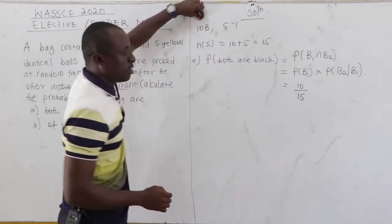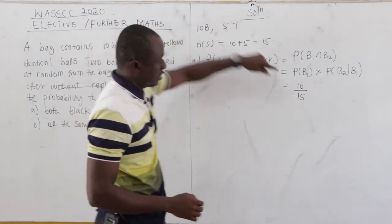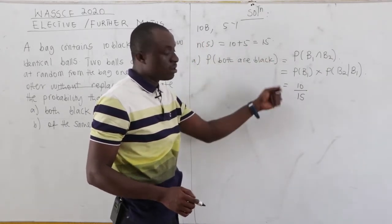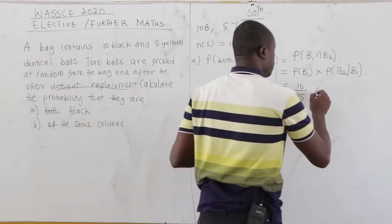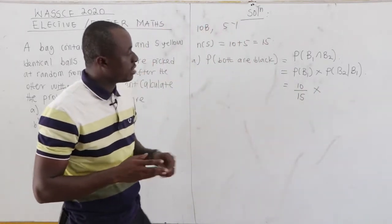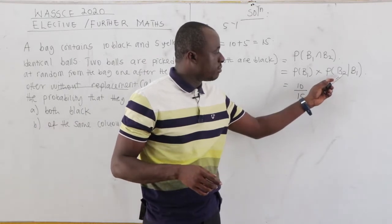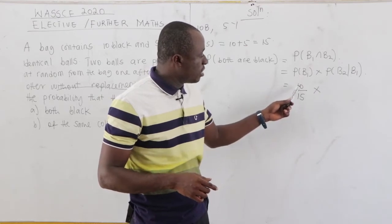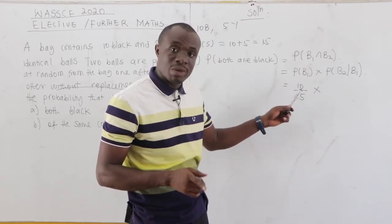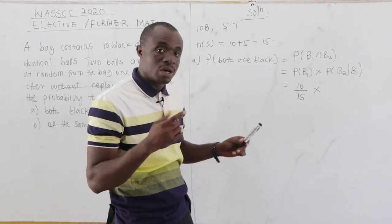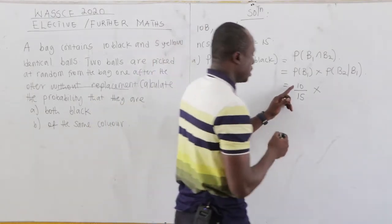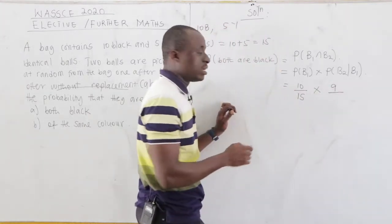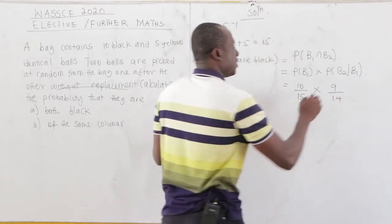The number of events is 10 and the number of sample space is 15, so P(B1) = 10/15. For the second ball to be black, given the first was black, both the event count and sample space reduce by one — because it is without replacement. So P(B2 | B1) = 9/14.